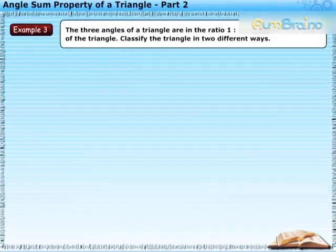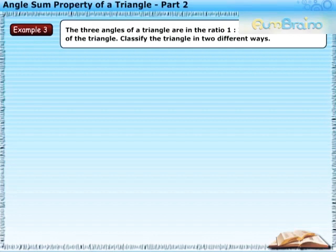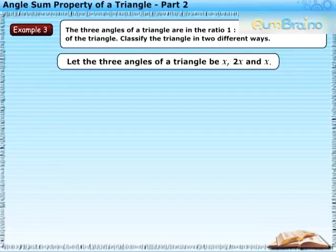Now consider the third example: the three angles of a triangle are in the ratio 1 is to 2 is to 1. Find all the angles of the triangle and classify the triangle in two different ways. Let the three angles of the triangle be X, 2X, and X.